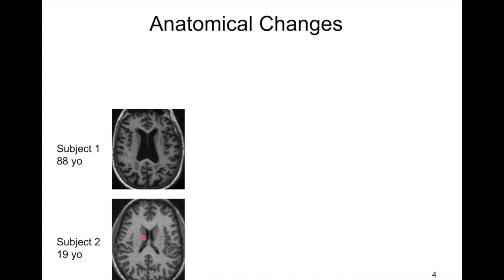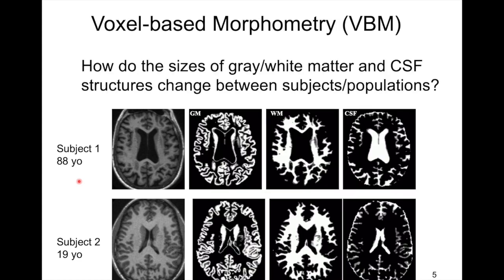Here are two volumes — one for an 88-year-old subject and one for a 19-year-old subject. You can see much bigger ventricles in the older one and the intersulcal space appears very different. If you do a tissue-type segmentation — gray matter, white matter, and cerebrospinal fluid — you can start to see differences: the older subject tends to have less gray matter, less white matter, and more CSF.